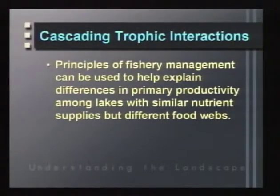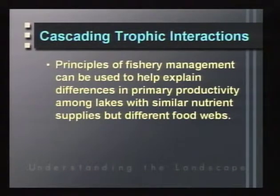We have two explanations for the control of plant production: bottom-up control, in which nutrients drive productivity and trophic structure, and top-down control, in which cascading effects down through the trophic structure determine plant community productivity. The trophic cascading concept can be an important management tool for lakes with similar nutrient levels but different food webs, and can be used to manage fisheries productivity and water quality simultaneously.